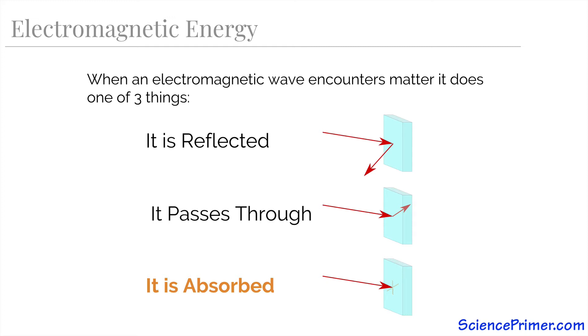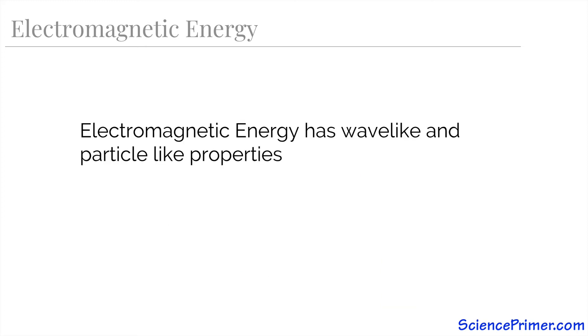Electromagnetic energy has complicated characteristics which can be difficult to describe. Some features are best explained by assuming that electromagnetic energy is a wave, while other characteristics make more sense when it is assumed to be a particle.